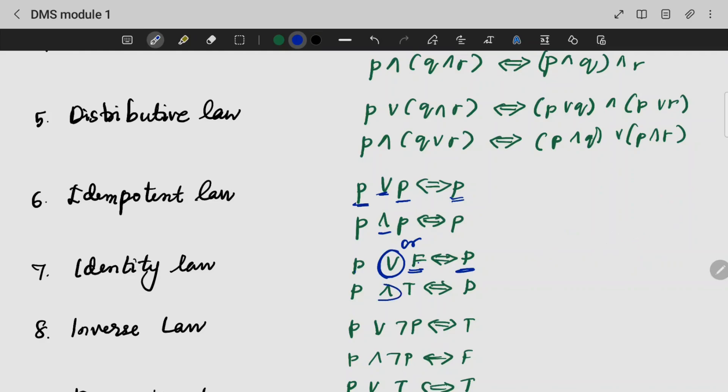Identity law for AND. P AND T will be equal to P, because it's full true. Then, if 1 and 1, we will be true. If 0 and 1, it will be false. So, again, it is P.